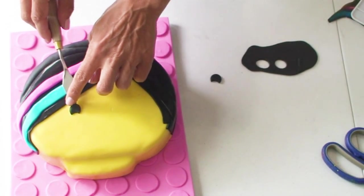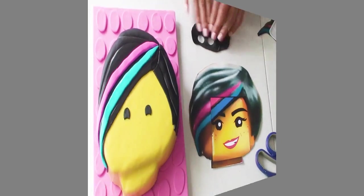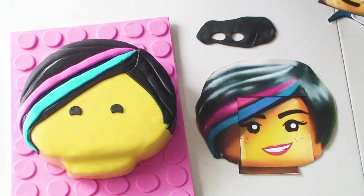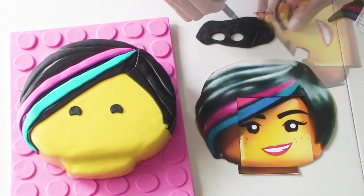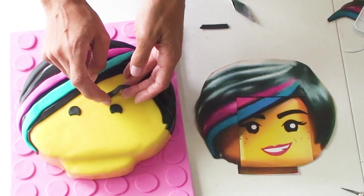Using those marks as a guide, position the eyes onto the cake. For the eyebrows, cut them out of the other copy of the stencil, trace around them, and position them on the cake also.